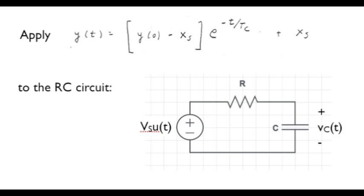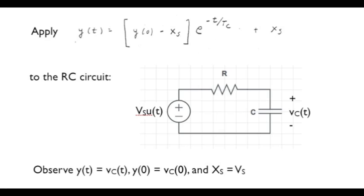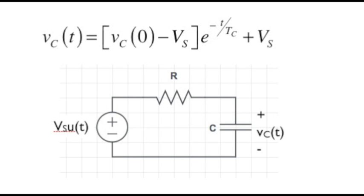Let's apply these mathematical results to an RC circuit with a step function input. Prior to t equals zero, the voltage source had a value of zero, and then at t equals zero the voltage source increases abruptly to v_s. In terms of relating this to the previous work: y, the state variable, is now the capacitor voltage; y(0) is the initial value of the capacitor voltage; and the constant associated with the step function is v_s, the height of the step. With those correspondences, the capacitor voltage as a function of time can now be written accordingly.